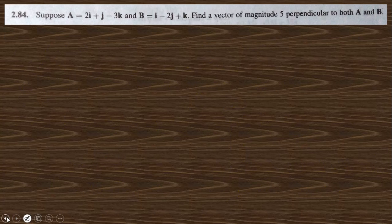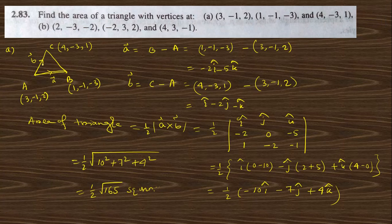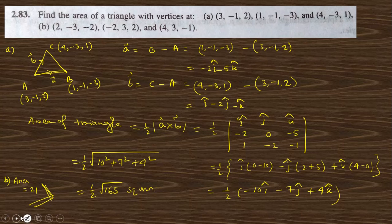For part b, use the same process and you will get the area equal to 21 square units. Do this yourself. If you have any problem with this, you can contact me via the WhatsApp or Telegram link.